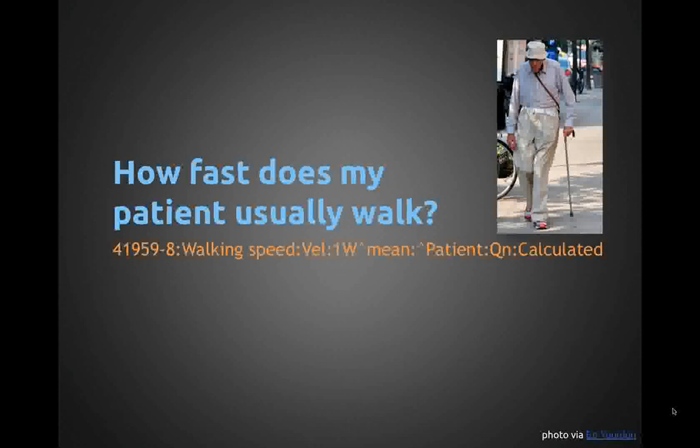From a broader clinical perspective, you might ask: how fast does my patient usually walk? LOINC is designed to provide a code and structured name to identify that observation as well. A one-week average walking speed might be a representation of this kind of question.